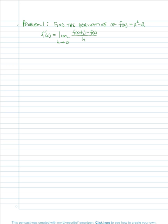There are really four steps to finding this derivative. The first step is to understand the component f of x plus h. Since f of x says: square the input and subtract 3, when the input is x plus h, we square x plus h and subtract 3.